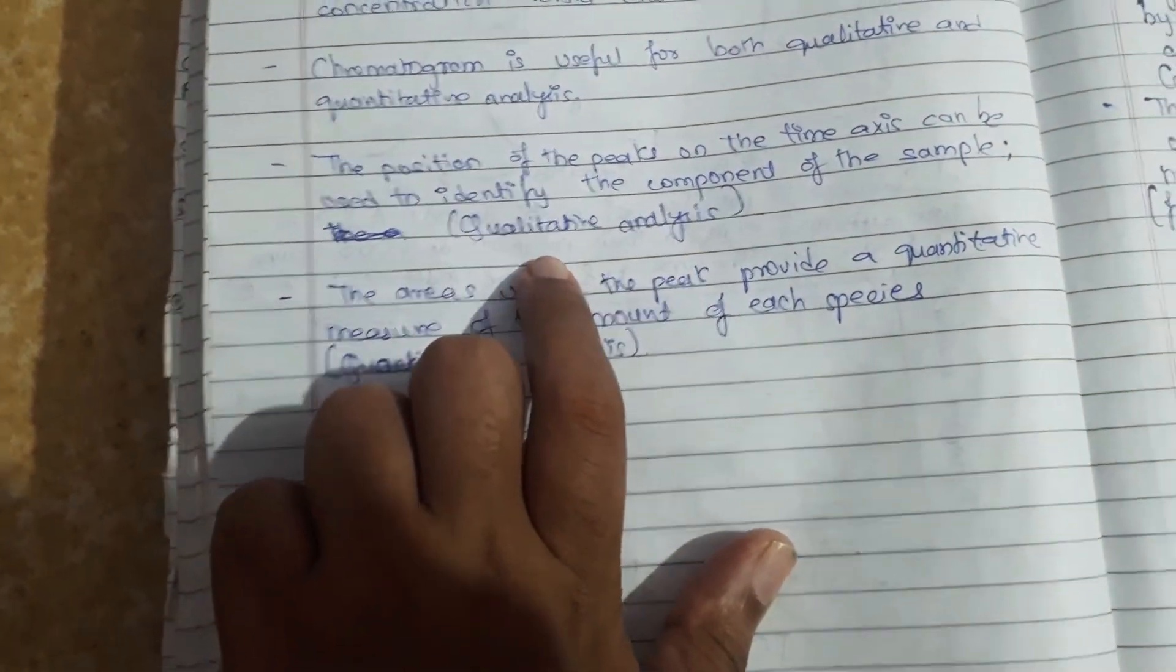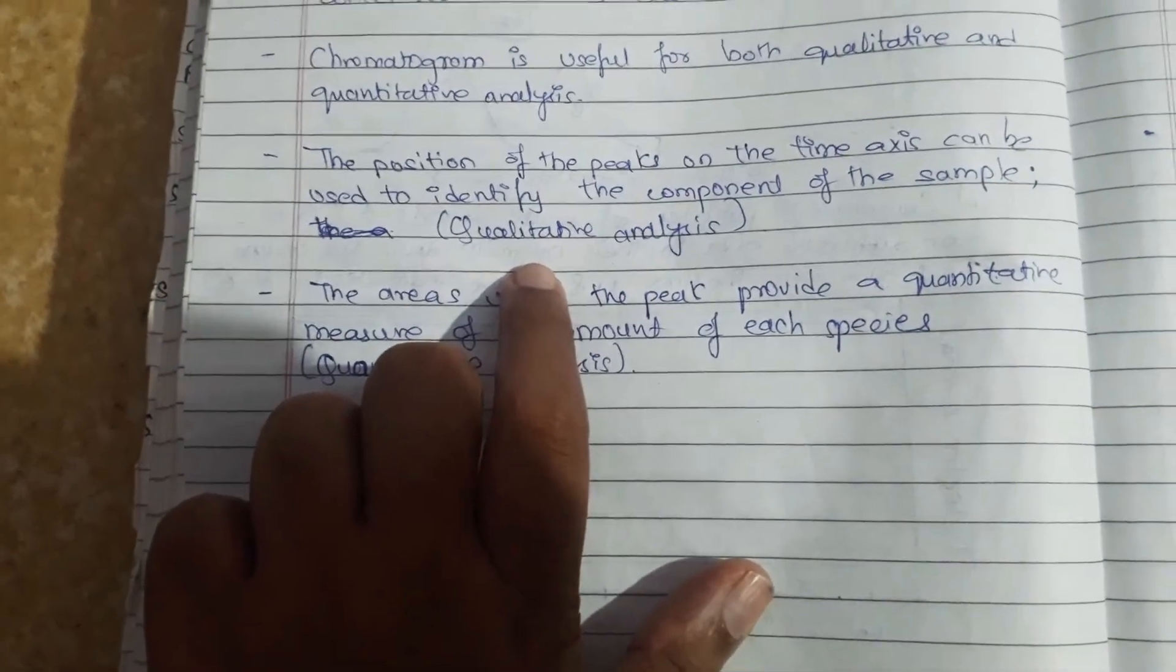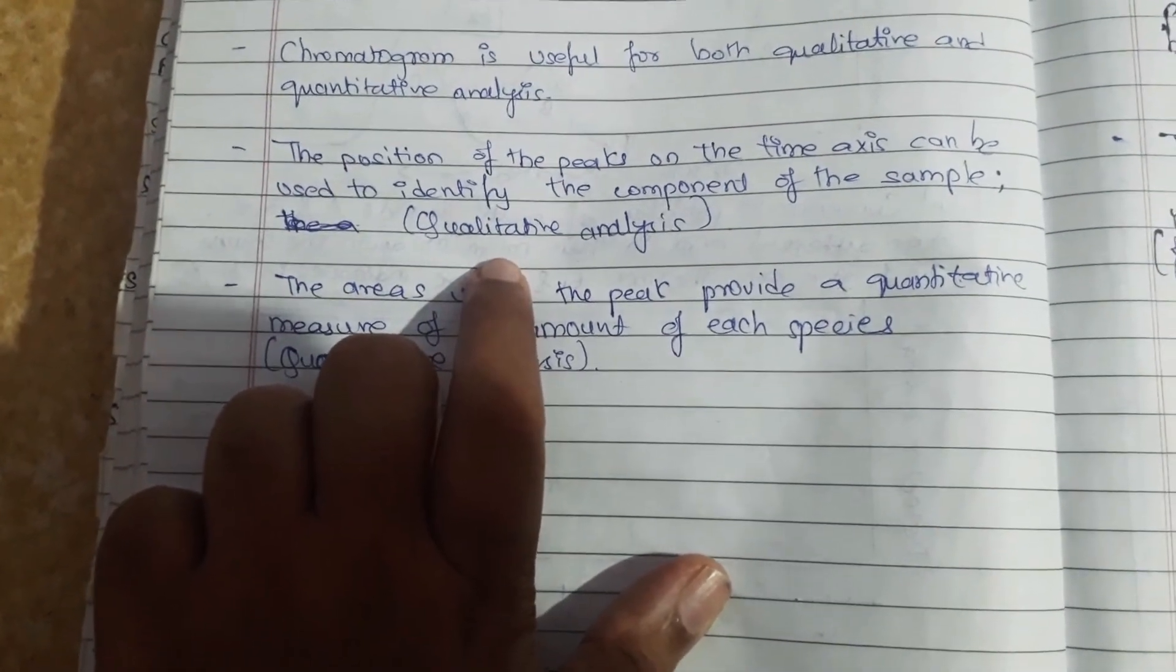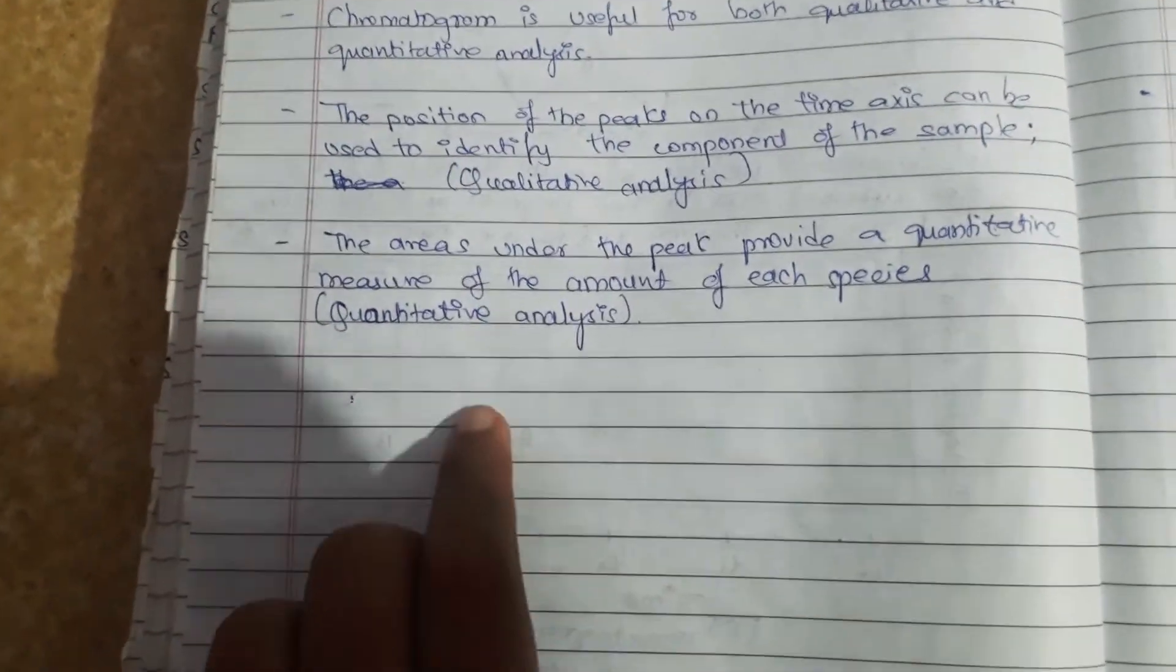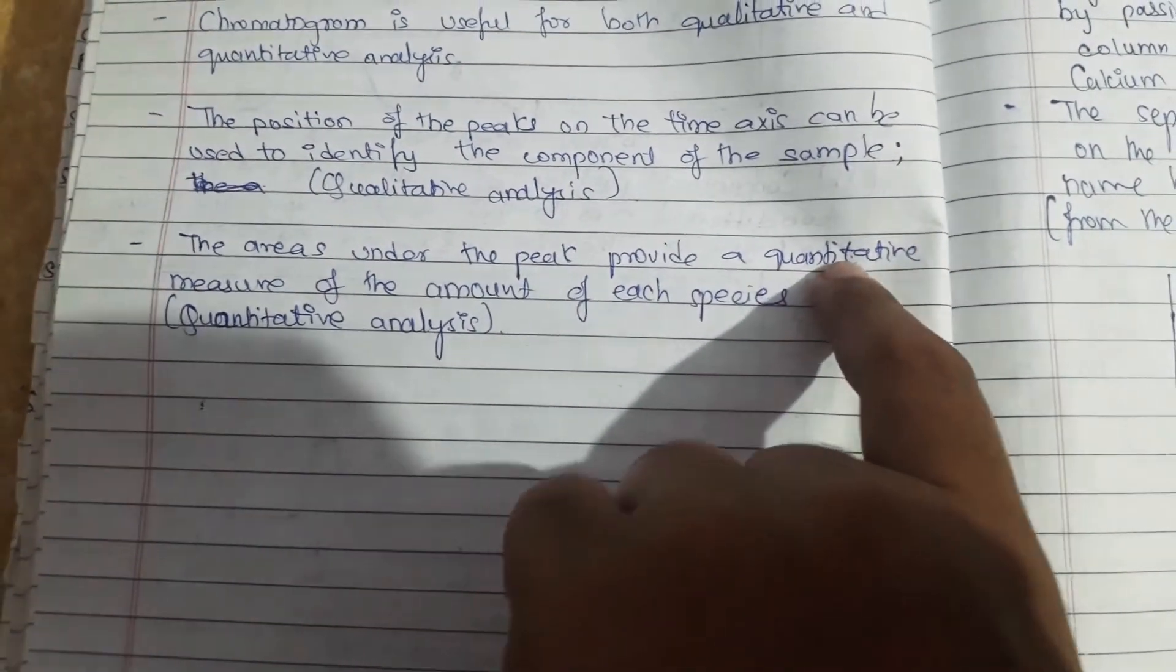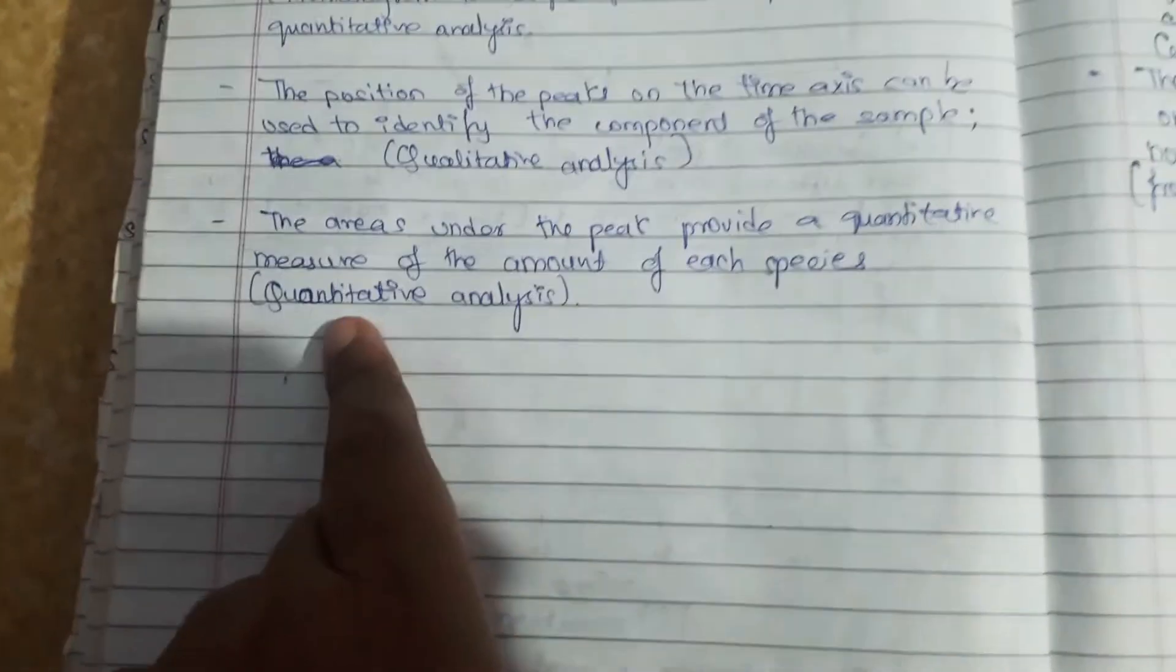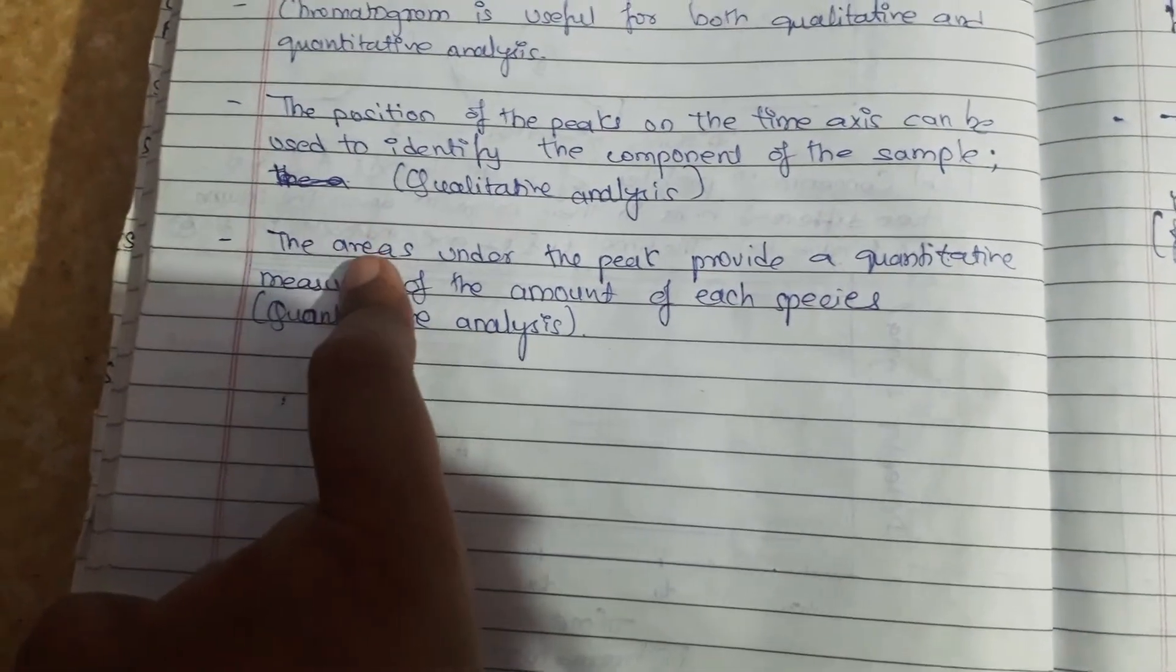In qualitative analysis, the peak position at a certain time helps identify the sample component. In quantitative analysis, the area under the peak provides a quantitative measure of the amount of each species.